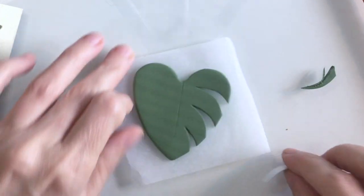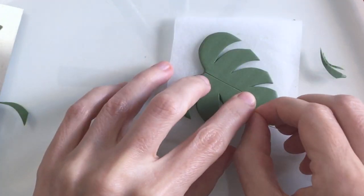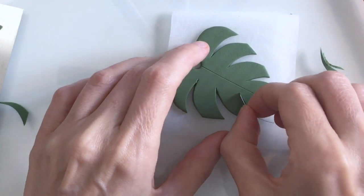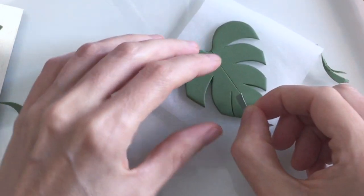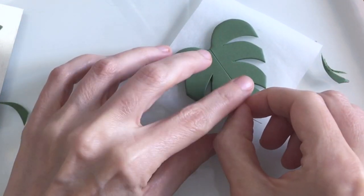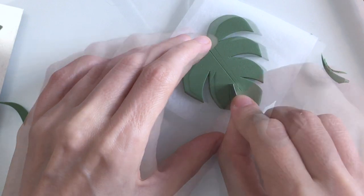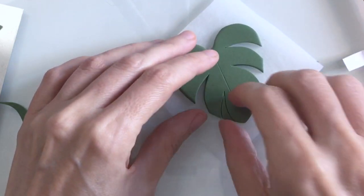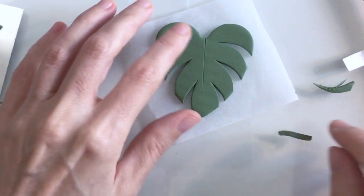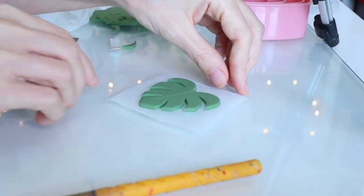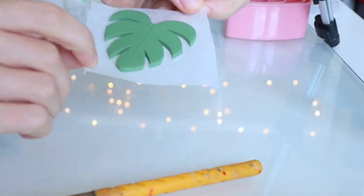So there we go and essentially you just need to do the same on the other side but I'd really try not to be too symmetrical because you want to create something that looks fairly organic really, so the more asymmetrical it is the better. And there we go, pretty pleased with that.